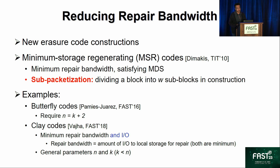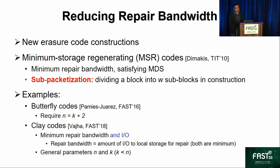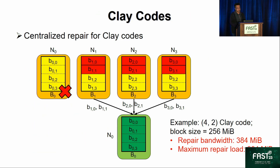The core idea behind MSR codes is the sub-packetization feature, which divides a block into W sub-blocks. When you repair a lost block, you only need to collect a subset of sub-blocks for reconstruction. Some examples include butterfly codes, which require n to equal k plus 2. The state-of-the-art MSR code construction is Clay codes, which minimize not only repair bandwidth but also I/O to local storage, and support general parameters n and k provided k is less than n. For a 4-2 Clay code, if N0 fails, we collect two sub-blocks from each of the three remaining nodes, giving a repair bandwidth of 384 MB and maximum repair load of 384 MB.